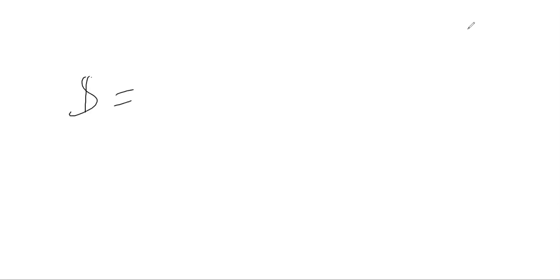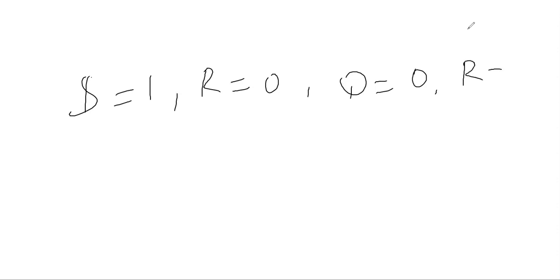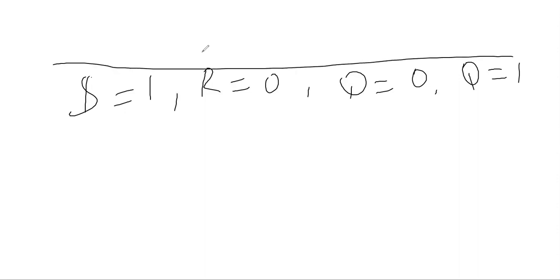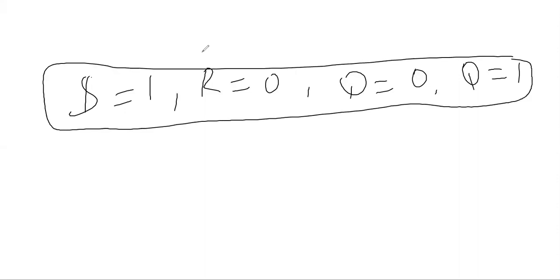This is the reverse of that gate. Here, in this NAND gate, if you give S equal to 1 and R equal to 0, you will get Q equal to 0. When S is equal to 0 and R equal to 0, it will give a memory or hold state.